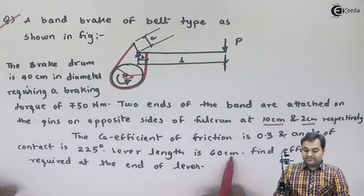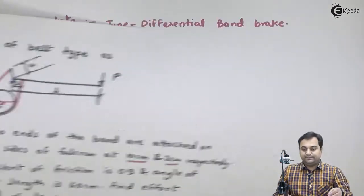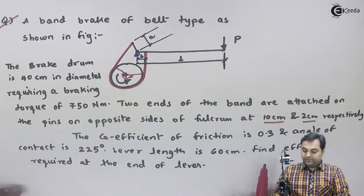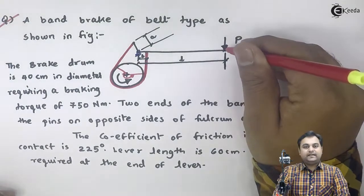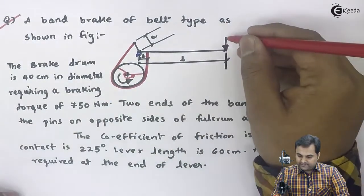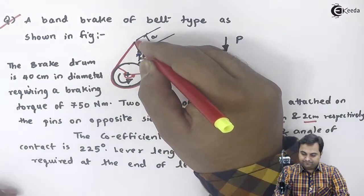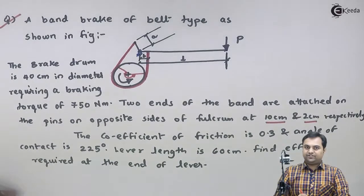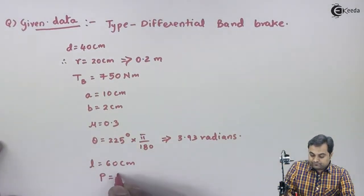The lever length is 60 cm — this is the distance from the fulcrum to the point of contact of the load, so L is equal to 60 cm. The question asks us to find the effort required at the end of the lever. When effort is applied downward, the lever end moves up, the belt tightens around the brake drum, and that results in braking action. So we need to find the value of P.